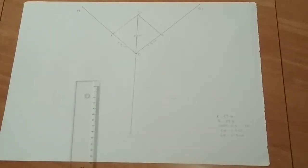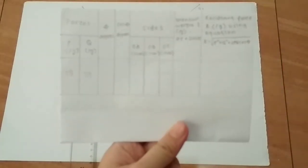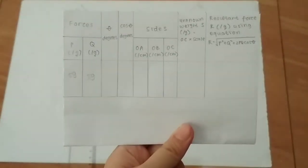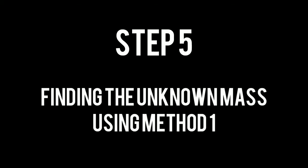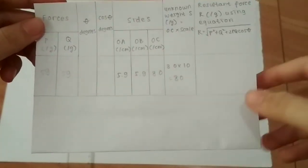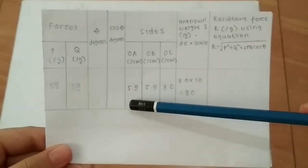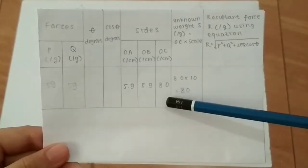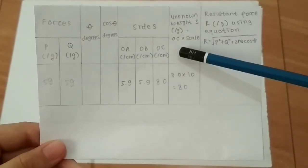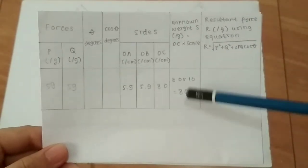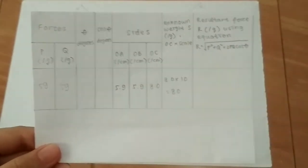So let's just plot there on our table right here. So I put all the information I have on my table. So OA is 5.9, OB is also 5.9, and OC as we measured before, it's 8. And so the unknown weight S from this method is 8 times the scale, which is 10, so we get 80 grams.